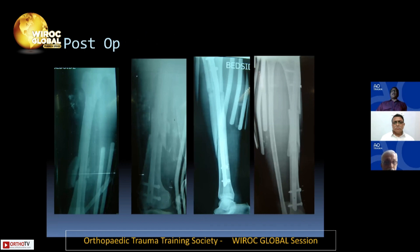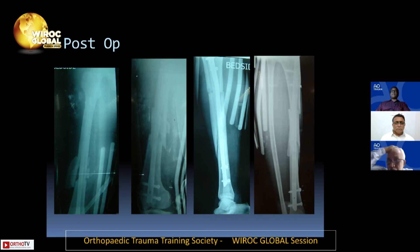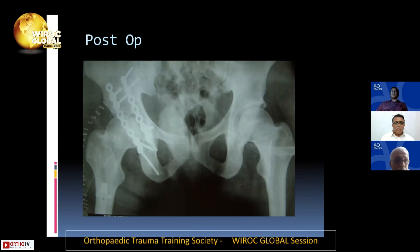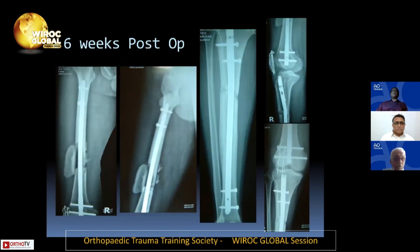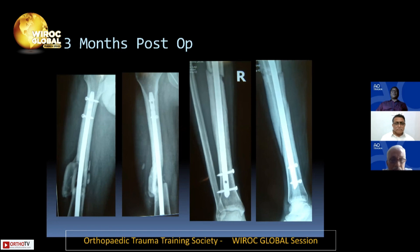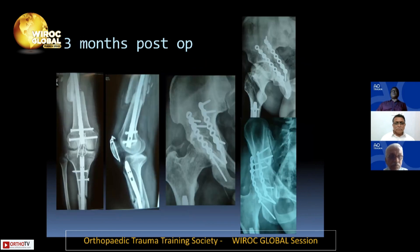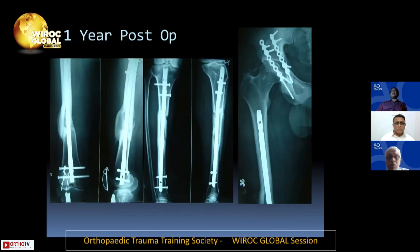On the post-op X-ray, the butterfly fragment was left undisturbed as this was closed nailing. At six weeks post-op, callus formation was already beginning and the position looked good. At three months post-op, the fractures were uniting well — even the displaced butterfly fragment was healing without being touched. The acetabular fracture had also held well at three months. At one year post-op, all fractures had united very well.